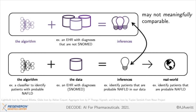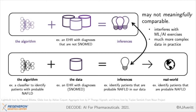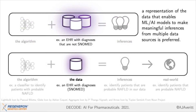Yet none of these inferences may be meaningfully comparable, and they may not be meaningfully comparable because the representation of the data is not consistent. If ML and AI models are meant to learn on this data in a way that is consistent across datasets, a mismatch in the data representations can absolutely interfere with these exercises, which will be significantly more complex than this very simple toy example. A representation of the data that will enable machine learning models to make meaningful inferences from multiple data sources is preferred.